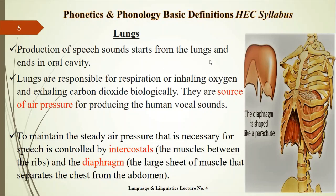Lungs are the first organ involved in the production of speech sounds because air starts from the lungs and ends in the oral cavity. They are responsible for respiration biologically and they are the source of air pressure for producing human vocal sounds. For the production of human speech sounds, they are responsible to maintain steady air pressure, controlled by the intercostal muscles between the ribs and the diaphragm — the large sheet of muscles that separates the chest from the abdomen. Lungs are the source of air pressure or air flow for the production of human speech sounds.